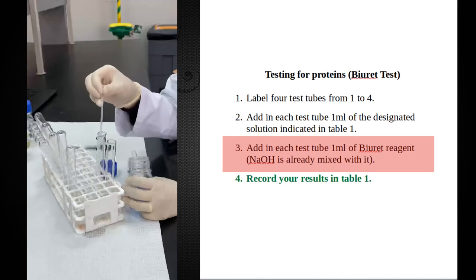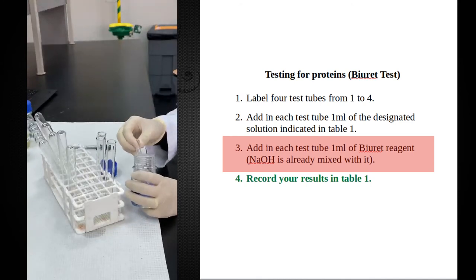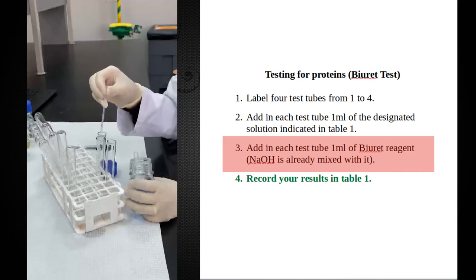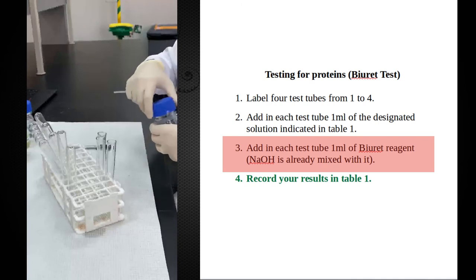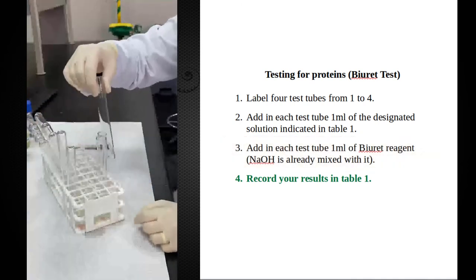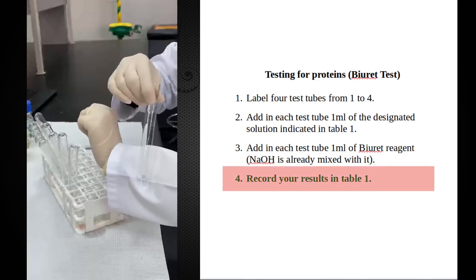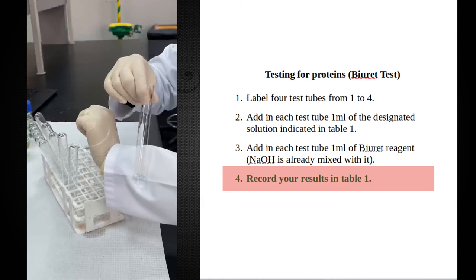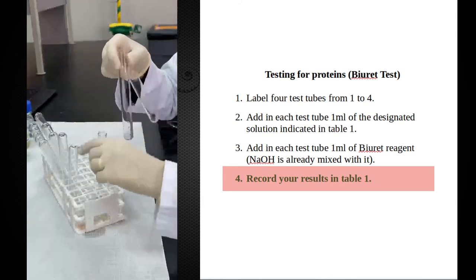A blue color is an indicator of a negative result. There are no peptide bonds. A violet color is an indicator of peptide bonds. We are going to mix our test tubes. So if you look at the negative control test tube, it's a very light blue color. This is how a negative result looks like.